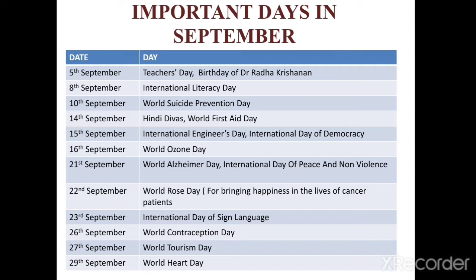21st of September is World Alzheimer's Day and also International Day of Peace and Nonviolence. 22nd of September is World Rose Day, which is for bringing happiness in the lives of cancer patients. 23rd of September is International Day of Sign Language and World Contraception Day. 27th of September is World Tourism Day. 29th of September is World Heart Day.